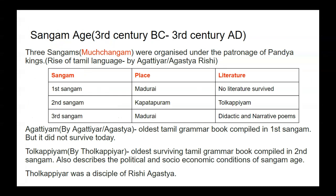The third Sangam was held at Madurai, where lyric and narrative poems were compiled. In the first and second Sangam the work was done mainly on Tamil grammar, and in the third Sangam the work was done on Tamil poems. Agattiyam was written by Agastyar or Rishi Agastya, and it was the oldest Tamil grammar book compiled in the first Sangam, but it did not survive today.